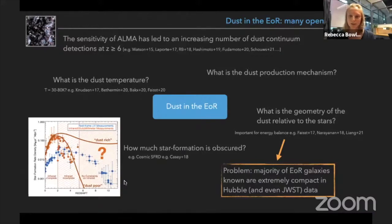So another fundamental question is what is the geometry of the dust relative to the stars. This is important in particular for energy balance where you often assume these things are mixed, but is this really true at these high redshifts?